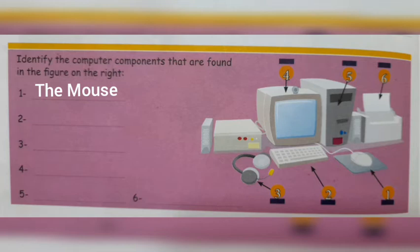Number two — it is the keyboard. What is the use of the keyboard? We can type or we can write our name or numbers. The use of the keyboard is we can type a name, we can write our name and numbers.